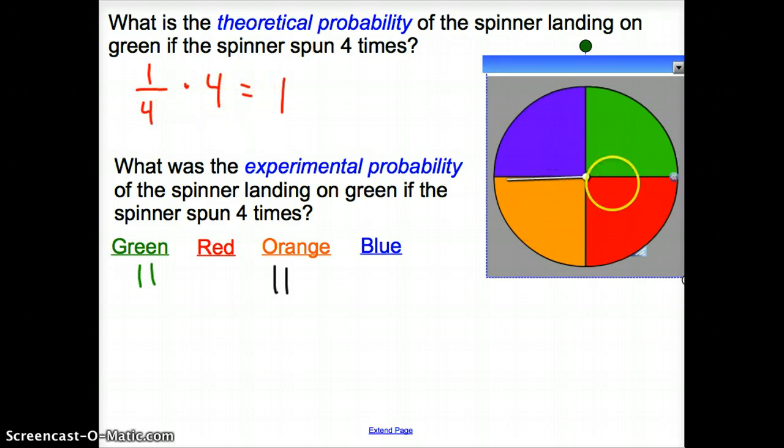But just with a small sample size, with a small amount of times we perform the experiment, it's not always going to be what it should be. So again, theoretical probability is what it should be. Experimental probability is what actually happened.